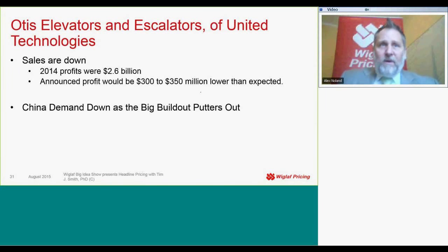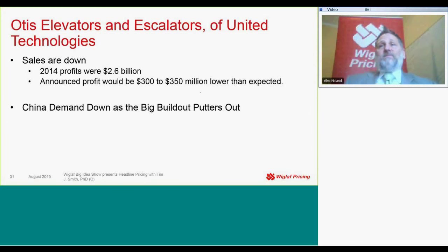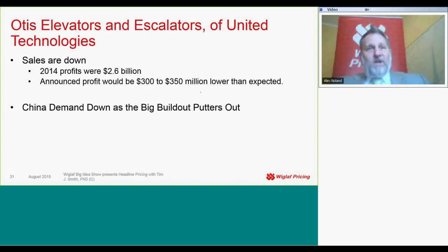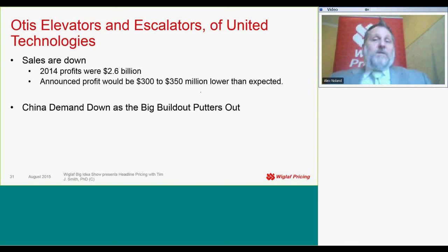Sales are down in 2015. In 2014, profits were $2.6 billion. They announced at United Technologies at a shareholder meeting that they anticipated the profit would be $350 million lower than expected. That's a huge hit. What's driving this hit? Back to China.